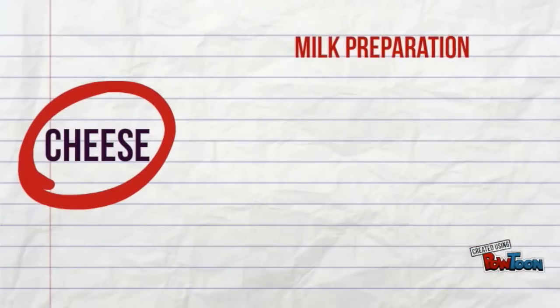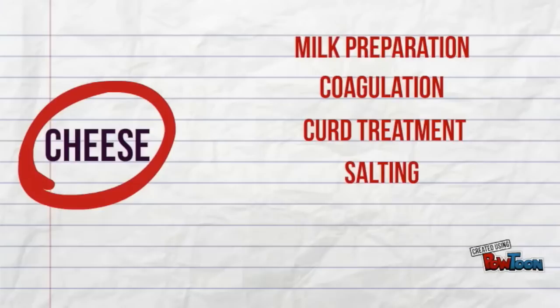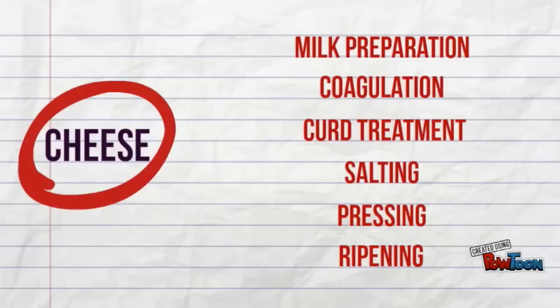There are a few steps included in commercial cheese production such as milk preparation, coagulation, curd treatment, salting, pressing and ripening.